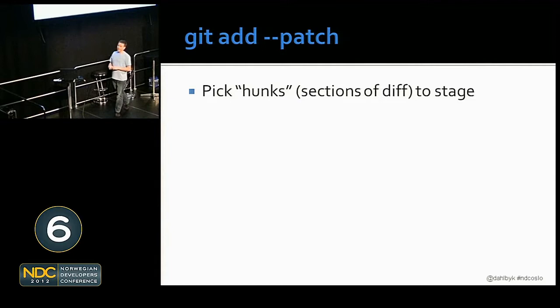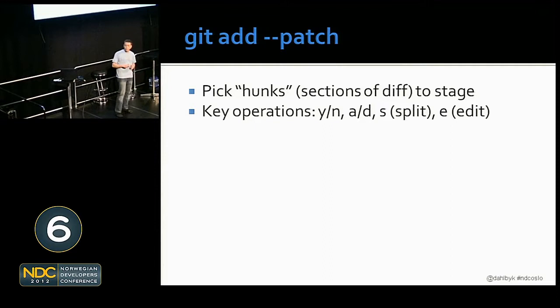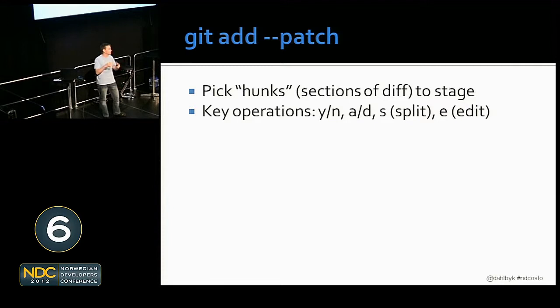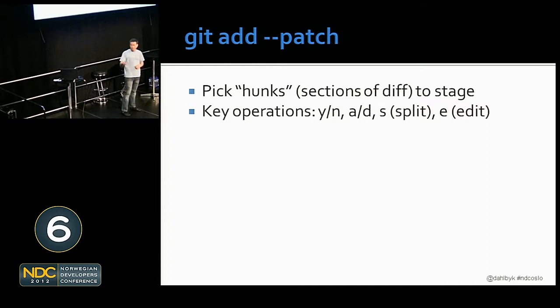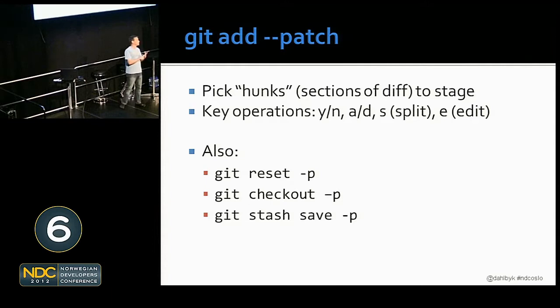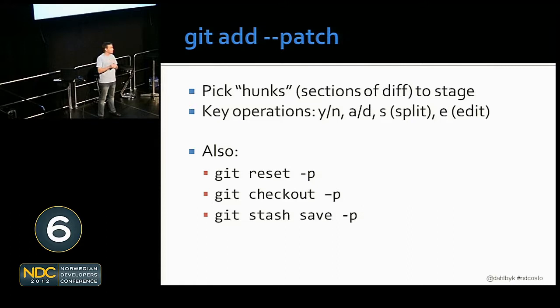`git add --patch` asks you to pick hunks — a fancy name for sections of a diff — that you want to stage. There are a couple main operations: yes or no, do I want to include this? `a` or `d` — include the rest or skip the rest. `s` to split if the hunk is too big — if there's a change and then three lines later another change, git may group those in the same hunk window. You can split those to handle them one at a time. And finally, `e` for edit — if splitting still doesn't get you specific enough, you can actually edit the patch to say exactly what you'd like the commit to look like. You can also do this for resets, checkouts, and stashing.